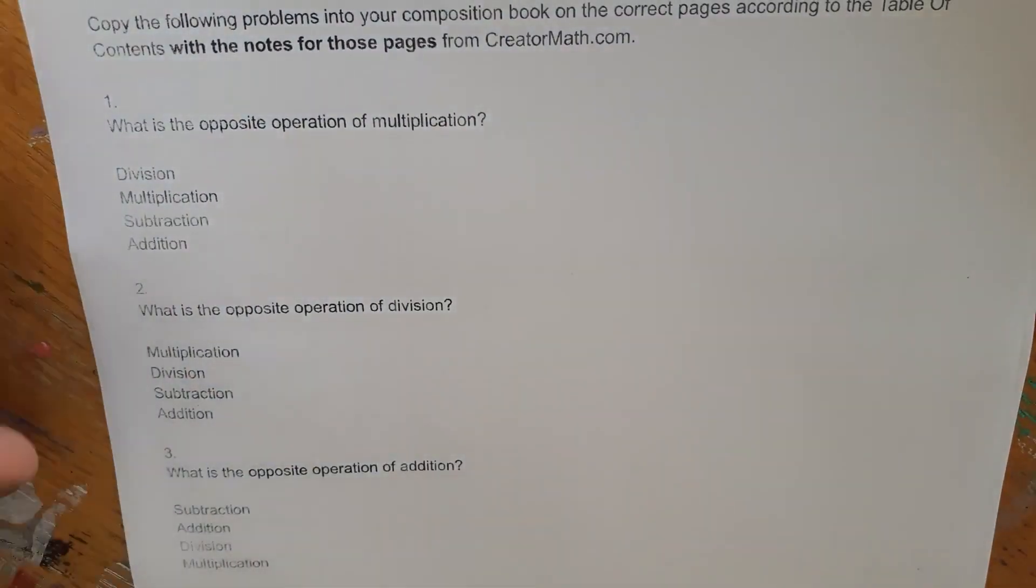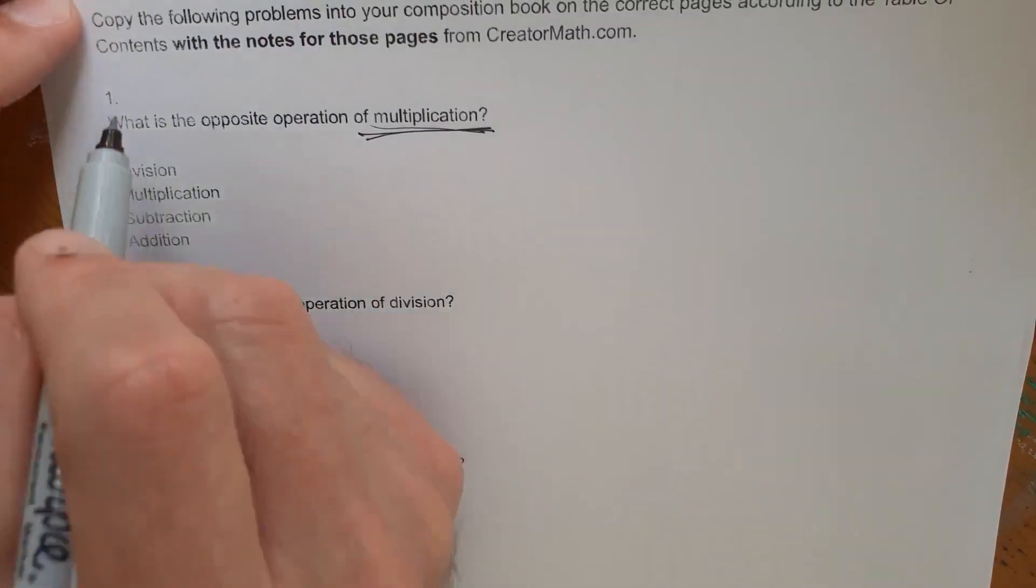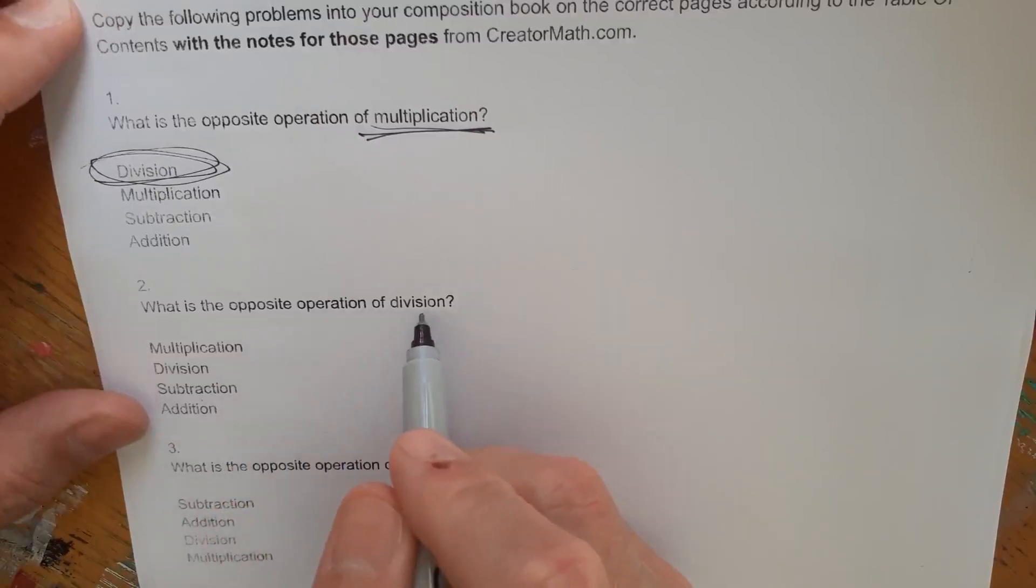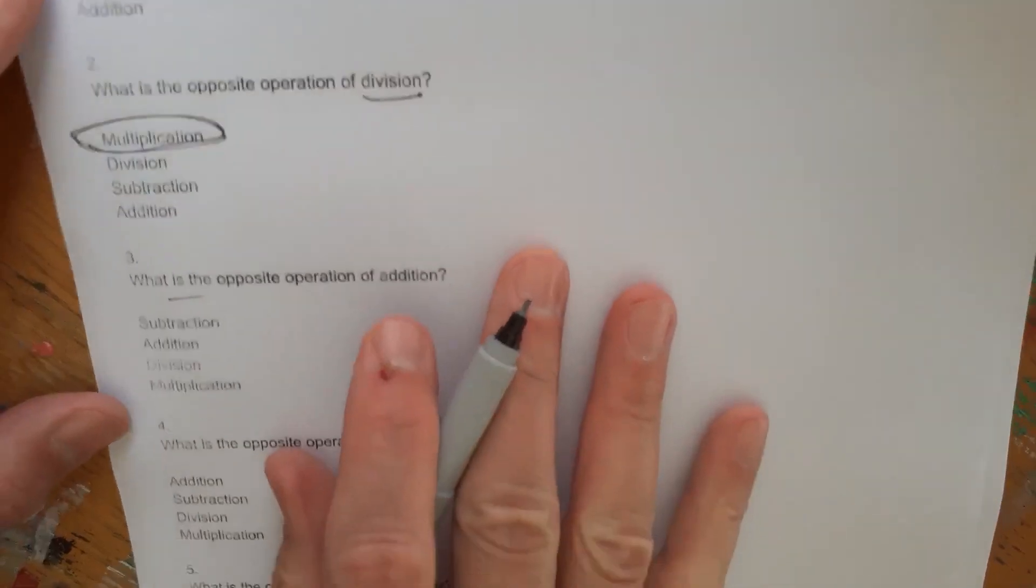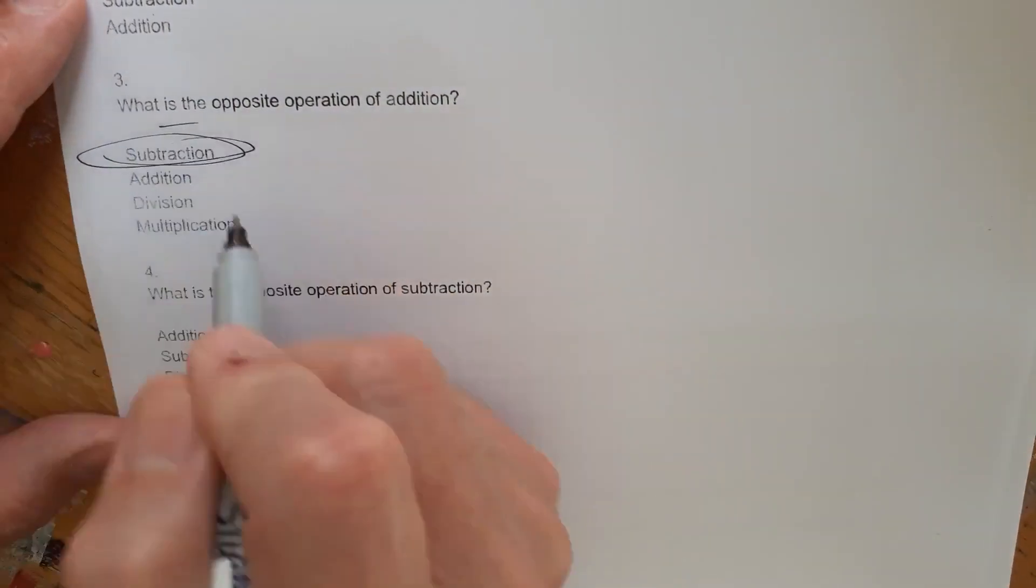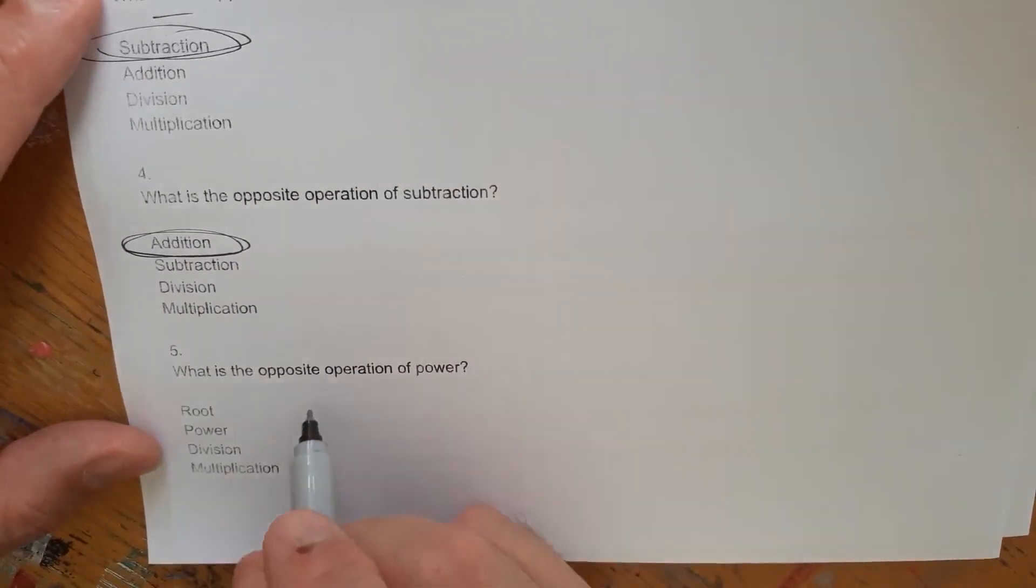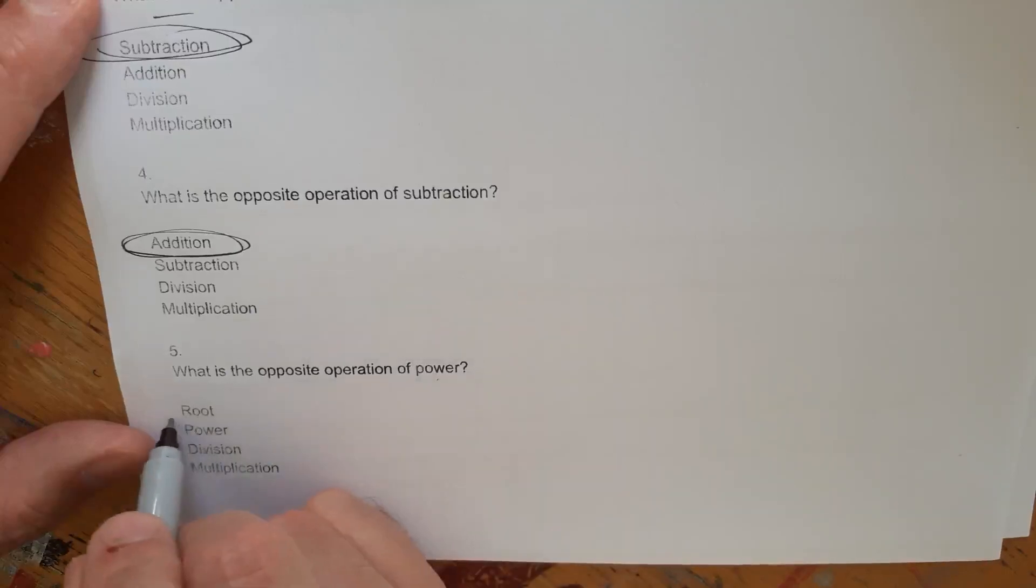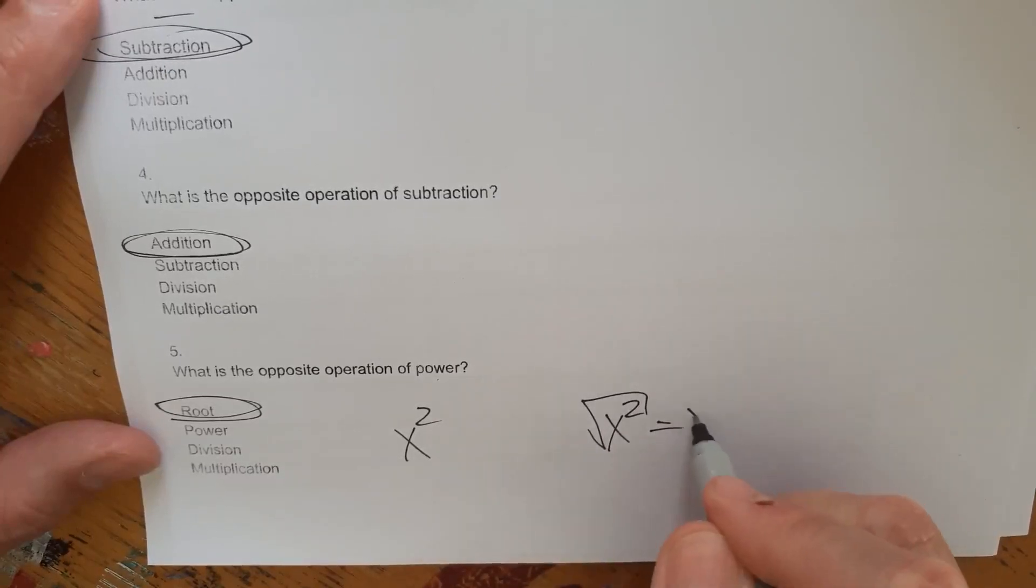Let's get into the problems and do these quickly. So what's the opposite operation of multiplication? And usually when I ask students, they have no problem going division. What's the opposite operation of division? Well, multiplication. What's the opposite operation of addition? Subtraction. What's the opposite operation of subtraction? Addition. What's the opposite operation of power? This one might be a little bit more complicated only because you probably learned it more recently. The opposite of a power is a root. So x squared. If you want to undo an x squared, we take a square root of an x squared and that goes right back to an x. Because the root reverses the power. And you're left with just the x.